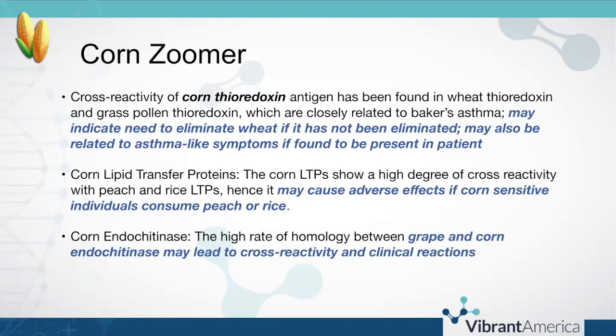There's also cross reactivity between corn thioredoxin and wheat thioredoxin and grass pollen thioredoxin. These proteins are similar in structure and this is related to baker's asthma. It may indicate the need to eliminate wheat if it has not already been eliminated. If a wheat zoomer is not positive but a corn zoomer is and you see corn thioredoxin elevated, wheat may also need to be eliminated in order to reduce or suppress the asthma-like symptoms that could appear in those patients.